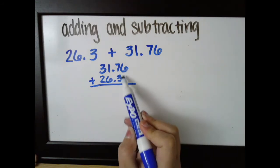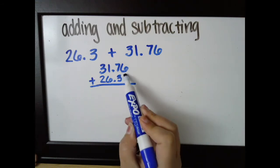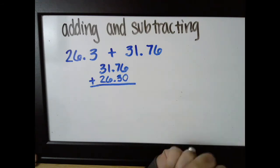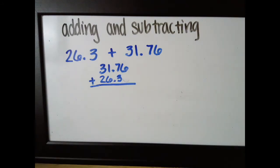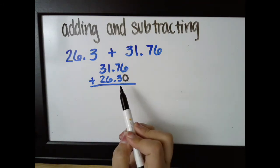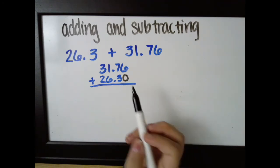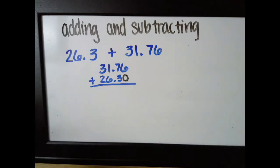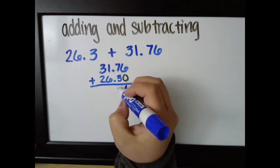Now just so I remember that there is a number here and I don't start adding here, I can place a zero. I can put that zero there because 30 hundredths and 3 tenths are the same thing. Putting that zero there just as a placeholder. So then six plus zero, six, seven plus three, ten.